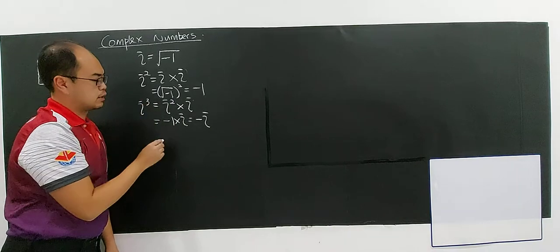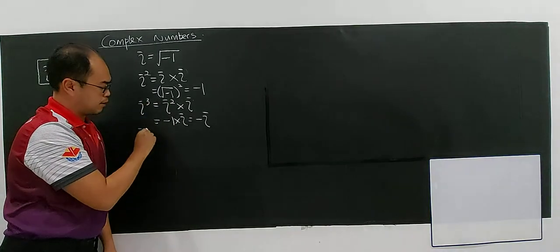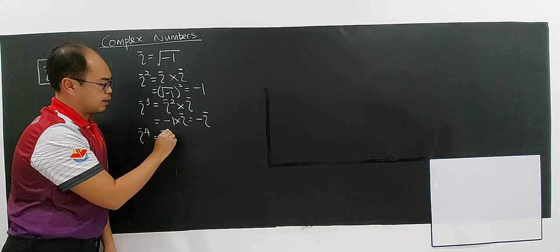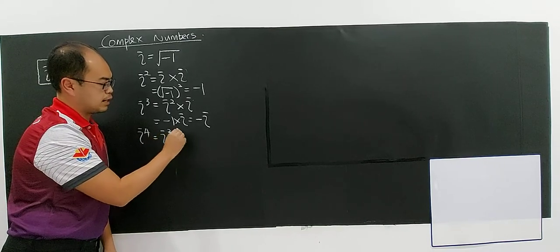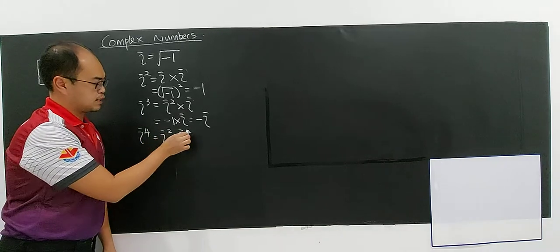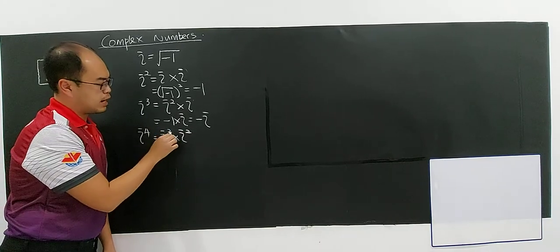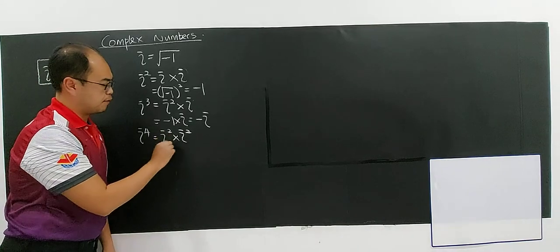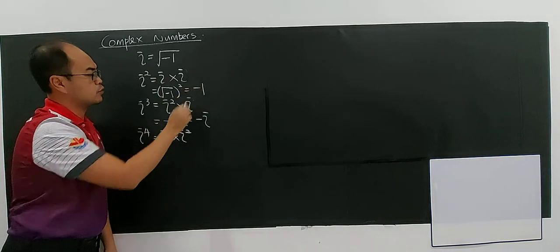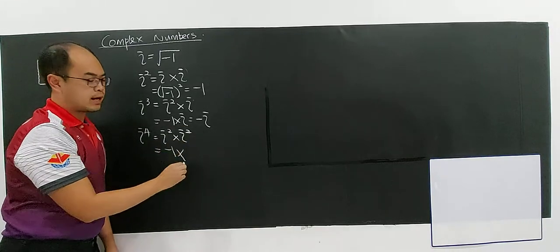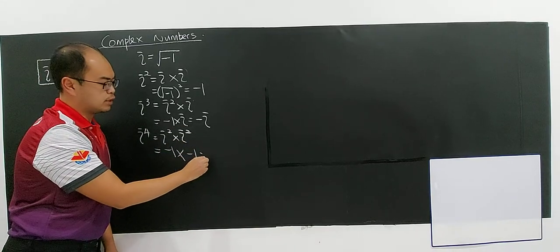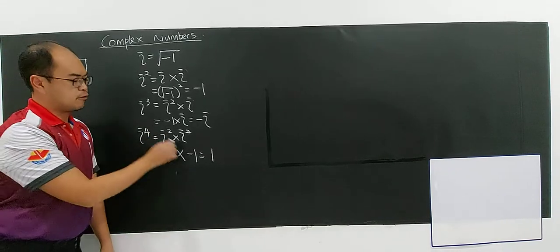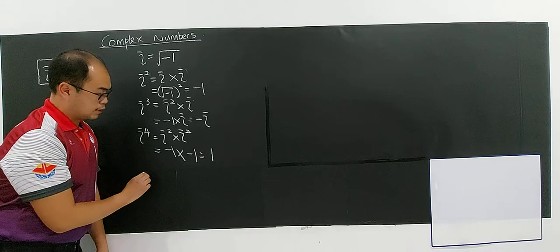Now we go to i to the power four. i to the power four can be rewritten as i to the power of two multiplied by i to the power of two, because two plus two gives four. i power two is negative one, and i power two is also negative one, so negative one times negative one gives you one. So i power four equals one.